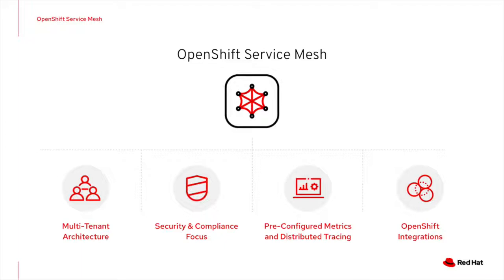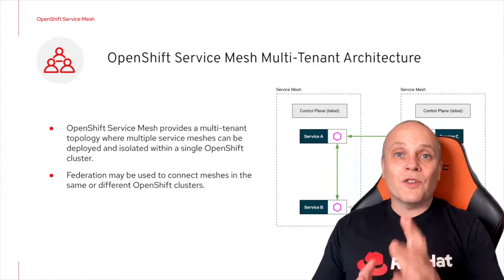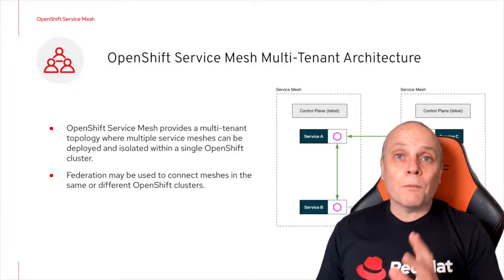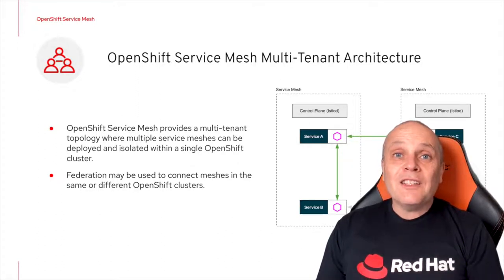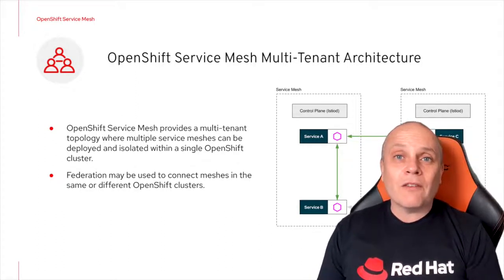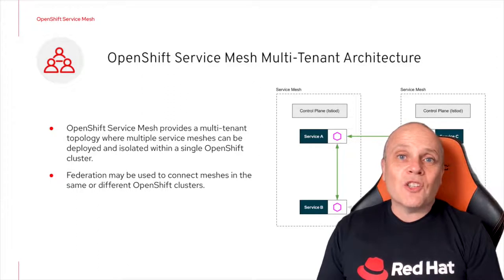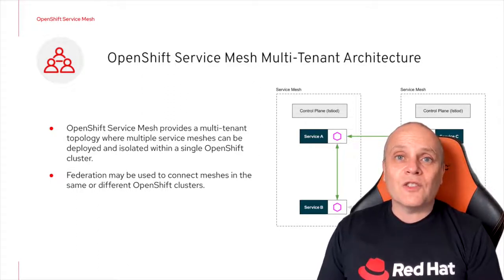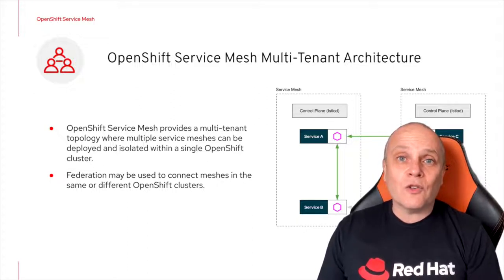OpenShift Service Mesh supports multiple meshes deployed within the same cluster. These meshes are isolated by default, with each having its own control plane and administrator, which facilitates multi-tenant installations. Services may be shared between service meshes, either in the same cluster or across different clusters using federation to import or export services. Federation can be used to facilitate a zero-trust or need-to-know multi-cluster service mesh topology.